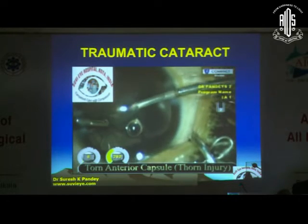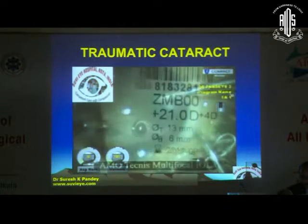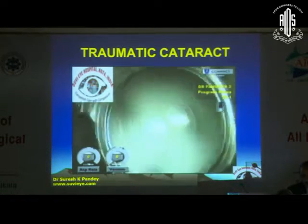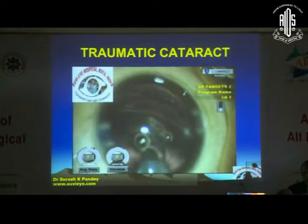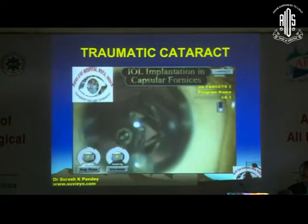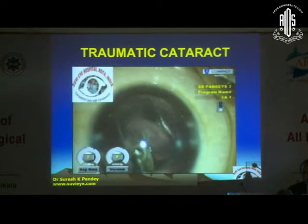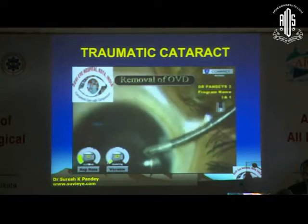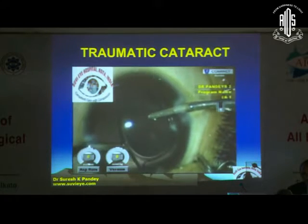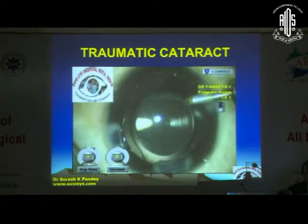Since this was a unilateral cataract case without any significant corneal astigmatism — the corneal cylinder was 0.5 diopters — we implanted a multifocal lens because this was a child and the parents were very keen to minimize dependence on glasses. It was very difficult to implant the multifocal lens because of the torn capsule, so we tried to implant the lens and put the haptics in the capsular fornices. The superior and inferior capsular fornices were intact, so we implanted the haptics there. Viscoelastic was removed, followed by stromal hydration.